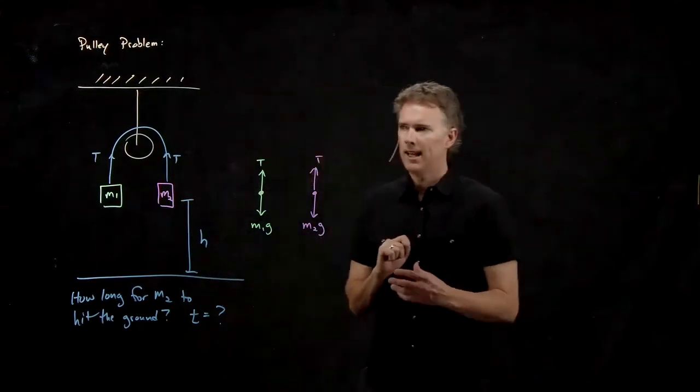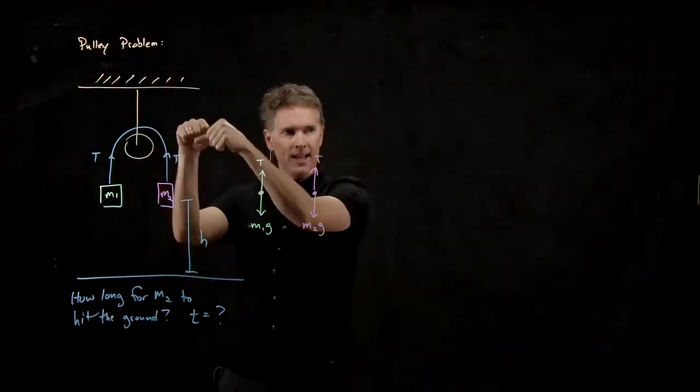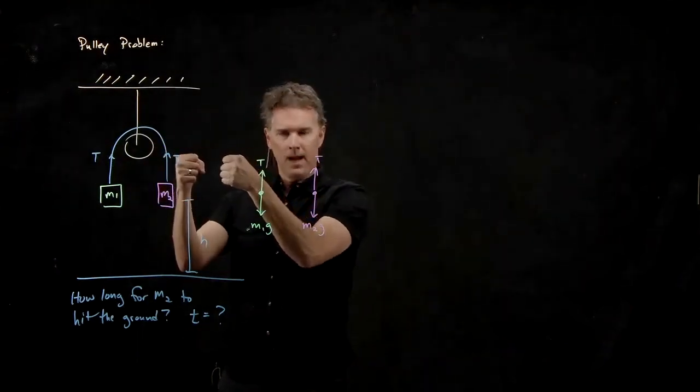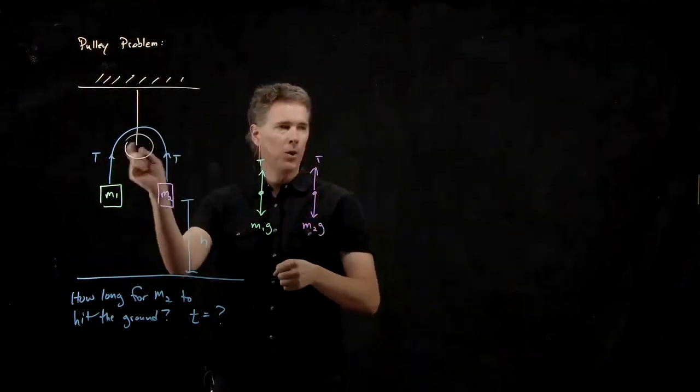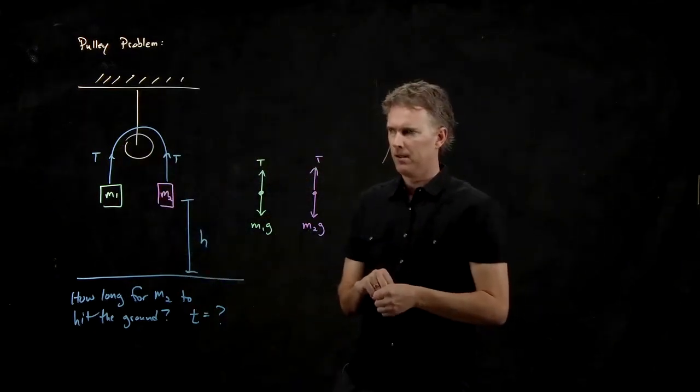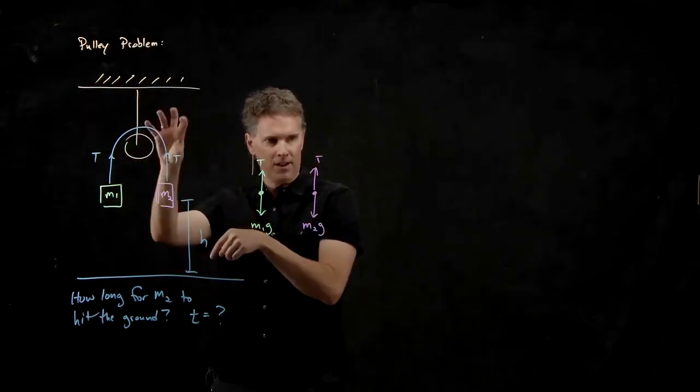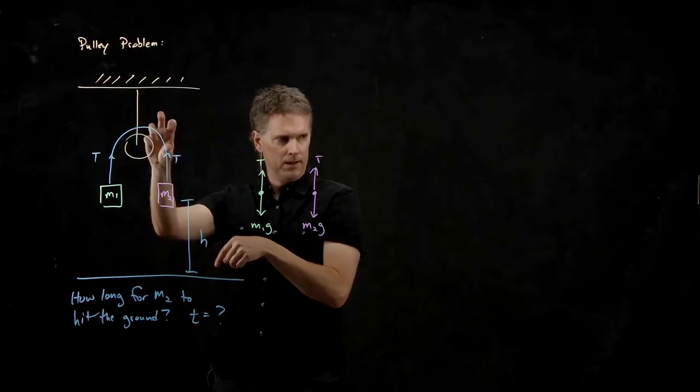But later on, we're going to get to pulleys that have mass and can grip the rope. And in that case, the tension T will not be the same on either side of the rope. You can have very different tensions on either side of the rope if the pulley itself is gripping the rope.